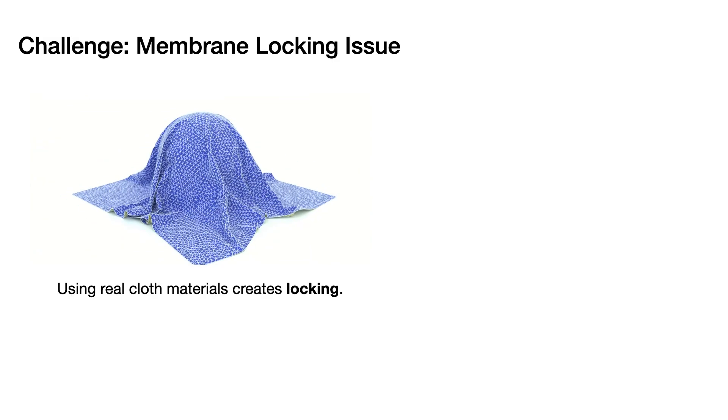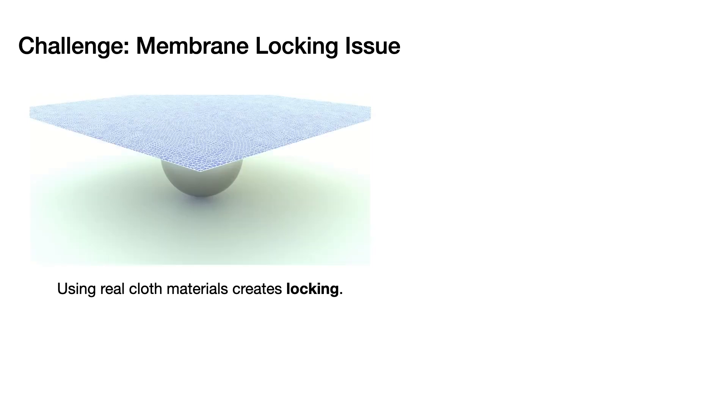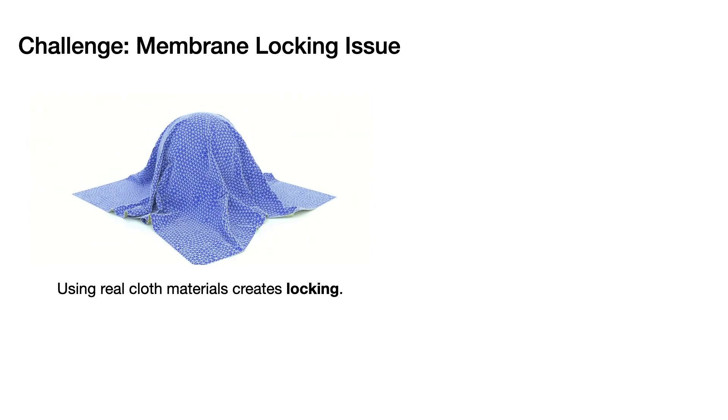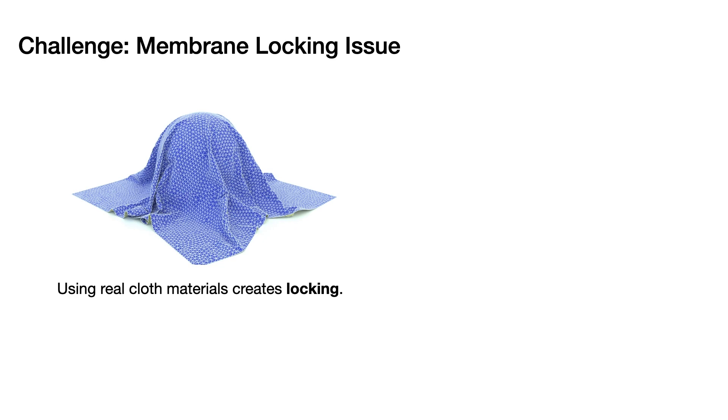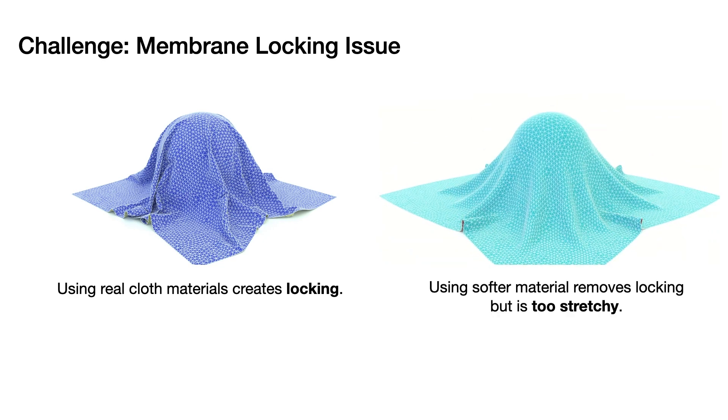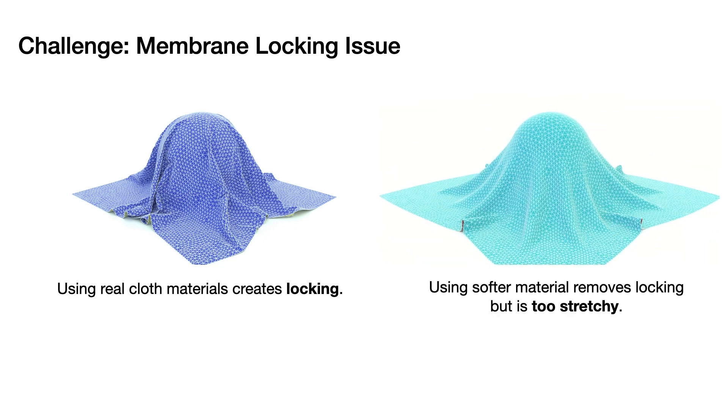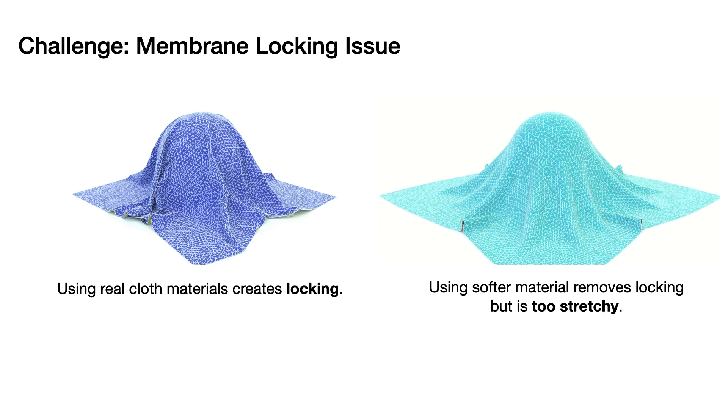Let's start with strain limiting. Simulating cloth with real-world material parameters creates locking with artificial stiffness and bending. Much softer membranes can be applied to get smooth flowing folds, but while the result is free from membrane locking, it stretches too much for most fabrics.